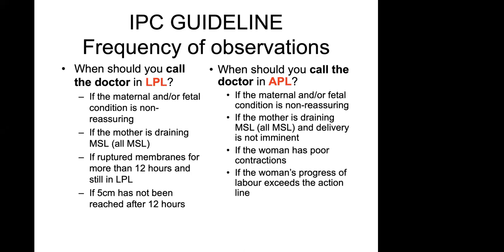In the active phase, same story: transfer or call for a second opinion if maternal or fetal condition is non-reassuring. MSL in the active phase — transfer or call for senior assessment if delivery is not imminent. The last thing we want is to put a G2P1 who is nine centimeters dilated with MSL into an ambulance. The safest place for a woman to deliver is in the facility, not the ambulance. If there are poor contractions and no progress, or if her progress exceeds the action line, that also warrants escalation.